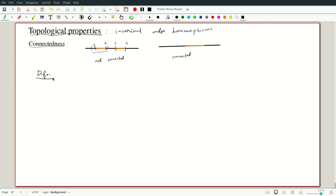This can be taken as the defining property of being connected or not connected in this case. So definition: a space X is connected if the only sets that are both open and closed are X and phi, the empty set.